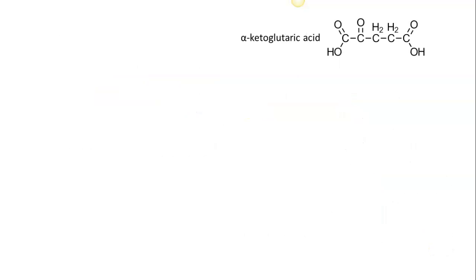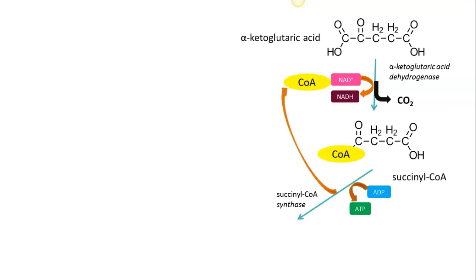The alpha-ketoglutaric acid then undergoes a reaction using the enzyme alpha-ketoglutaric acid dehydrogenase, which uses a CoA. It again takes NAD and forms NADH from it, and we release a carbon dioxide. So now we are down two carbons and we come up with a material called succinyl-CoA.